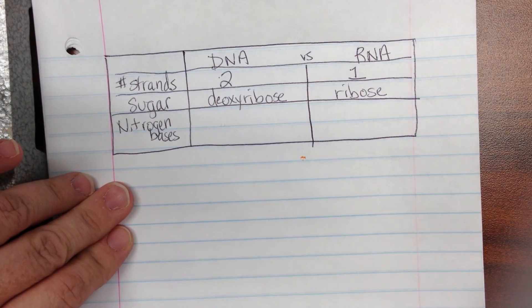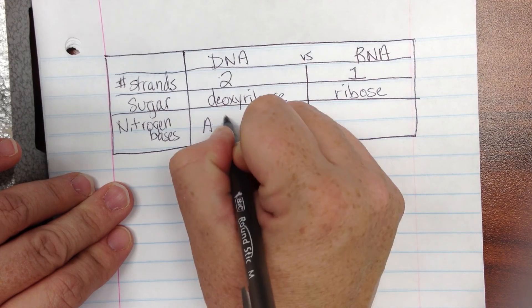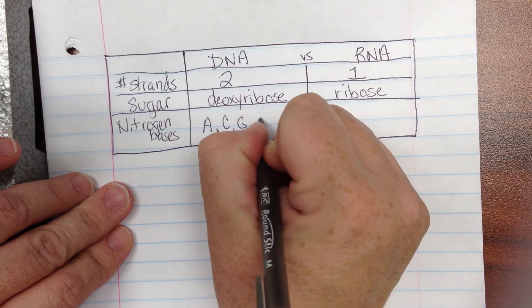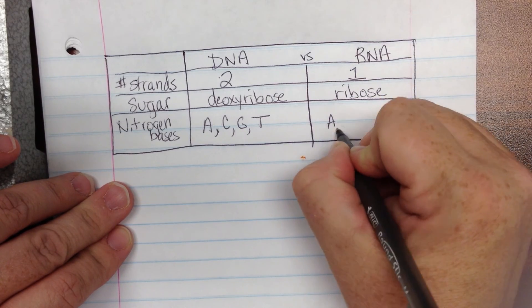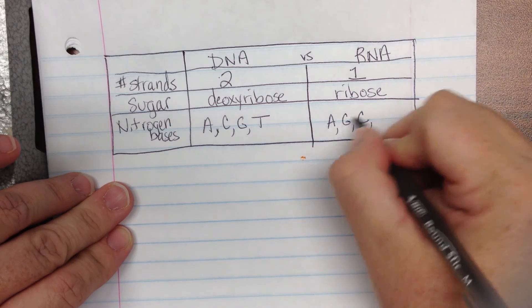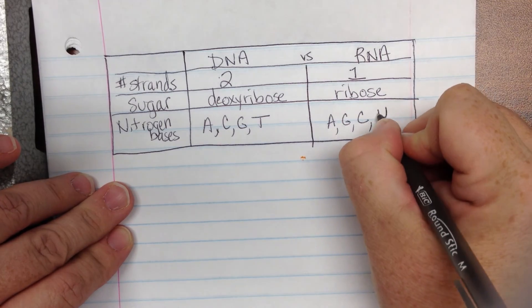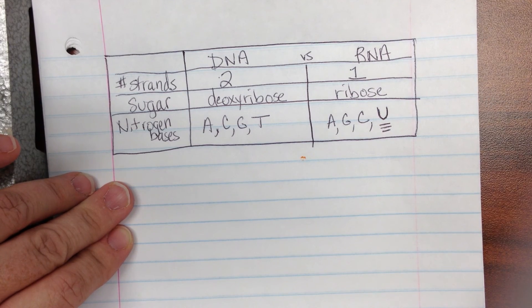And like I just mentioned to you the bases in DNA we know are A, C, G, T, but in RNA they're A, G, C, and not T but now we have U for uracil. And that's a big difference there.